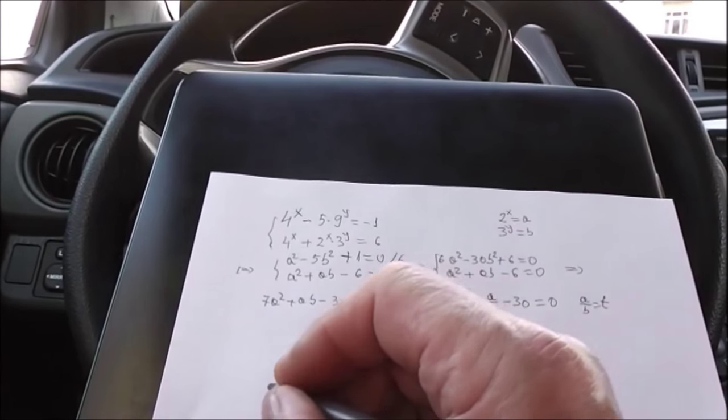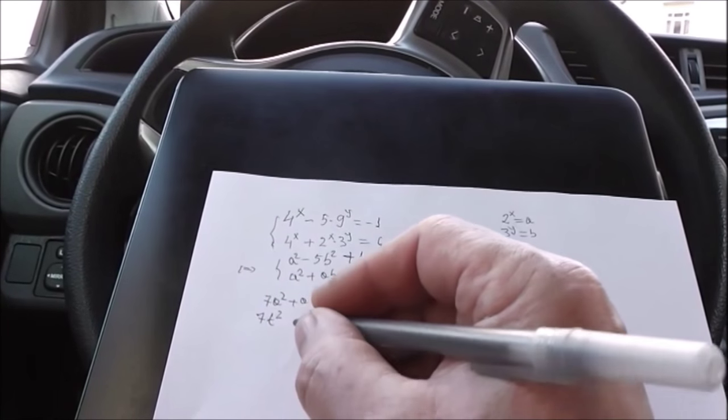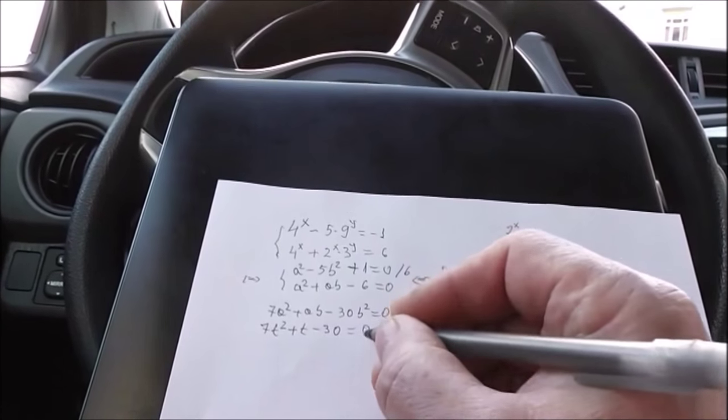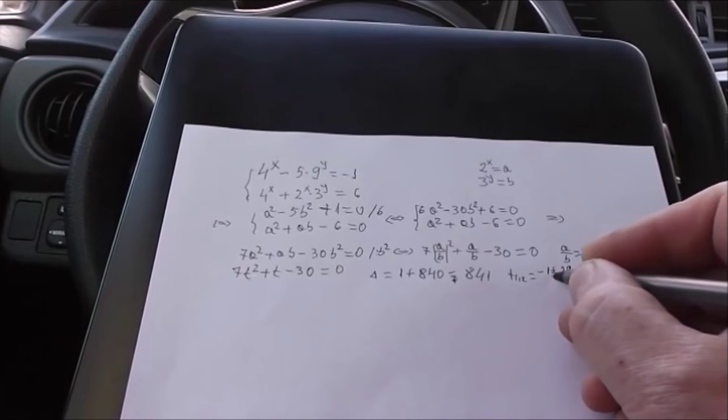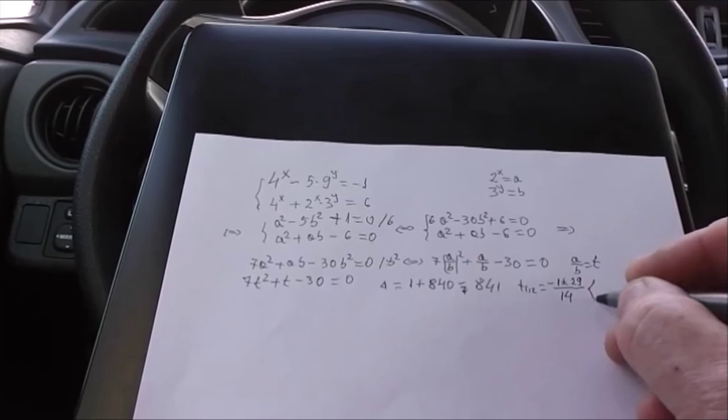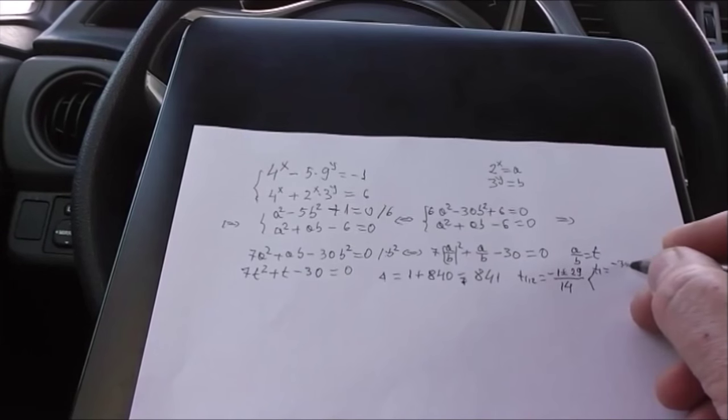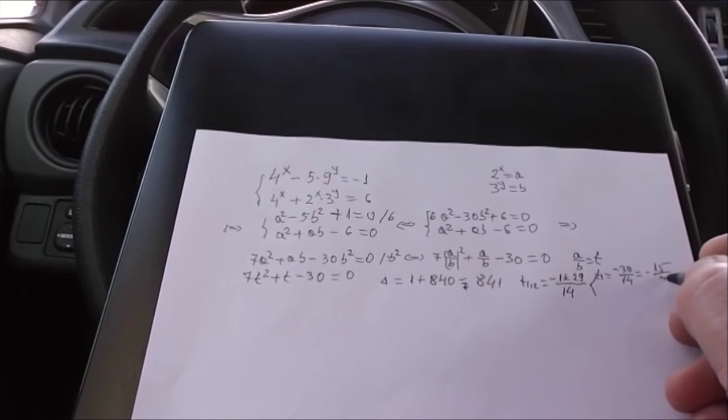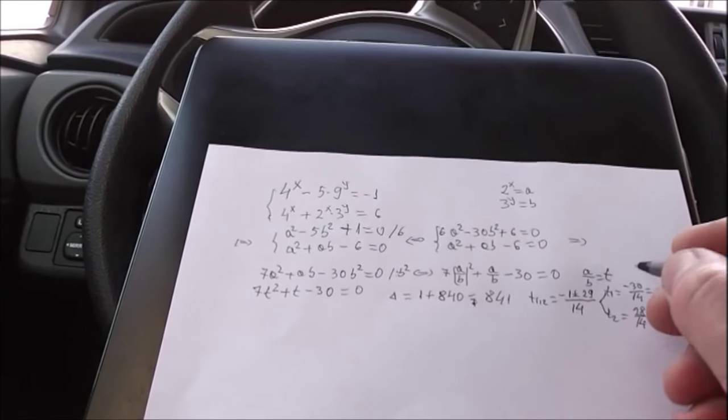Do we note a divided by b with t? Yes. And we have 7t² plus t minus 30 equals 0. t equals negative 1 plus minus 29 all divided by 14. And t₁ equals negative 30 divided by 14 equals negative 15 divided by 7. t₂ equals 28 divided by 14 equals 2. And t equals a divided by b and we replace it. Here I got stuck.